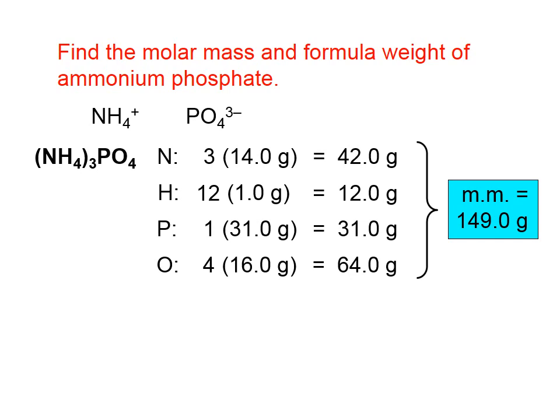1 mole of ammonium phosphate has 3 moles of nitrogen, 12 moles of hydrogen, 1 mole of phosphorus, 4 moles of oxygen. The mass of all those moles added up is 149.0 grams.